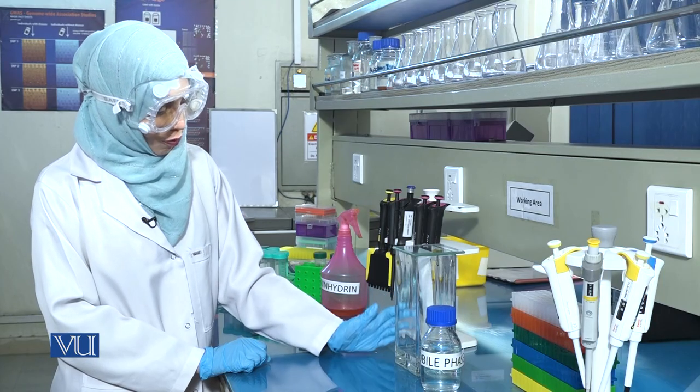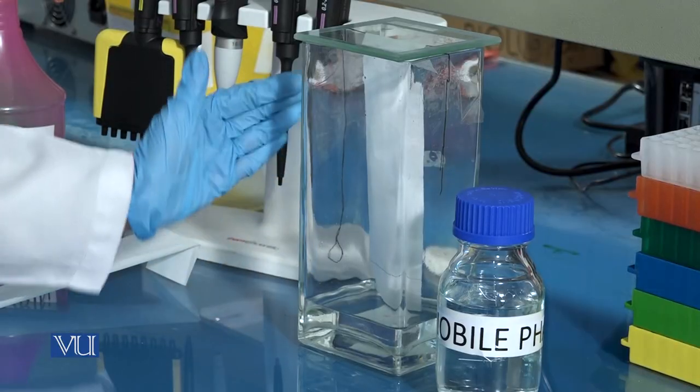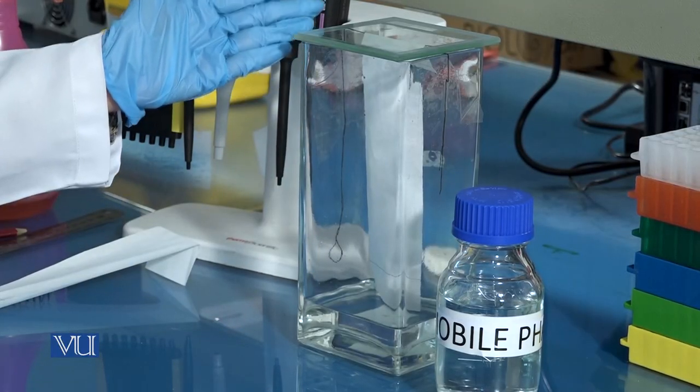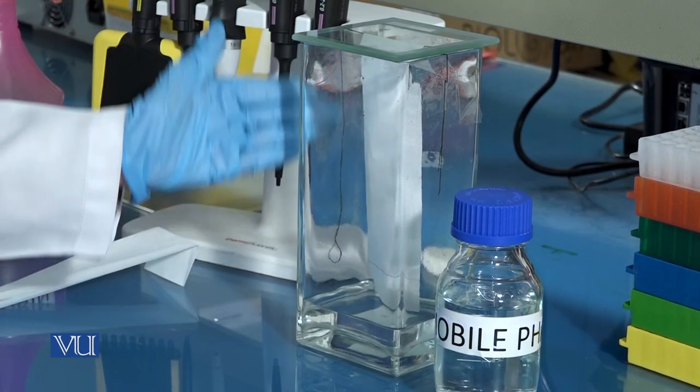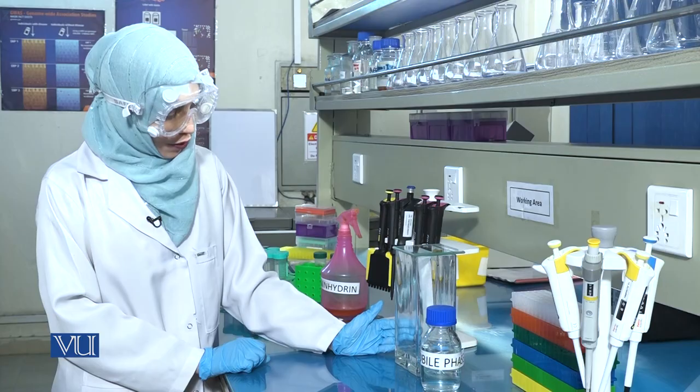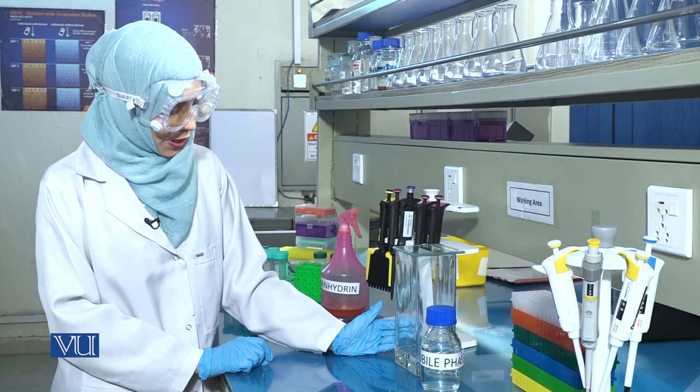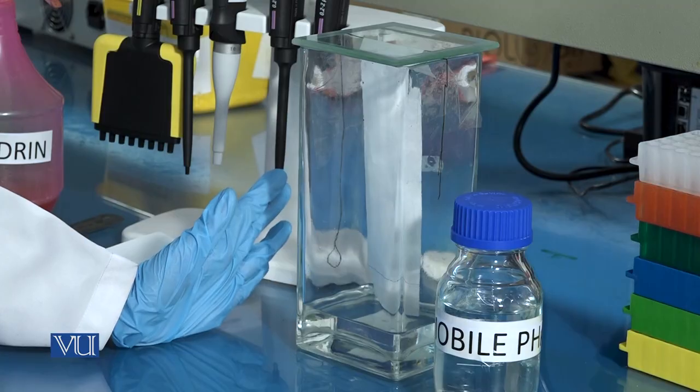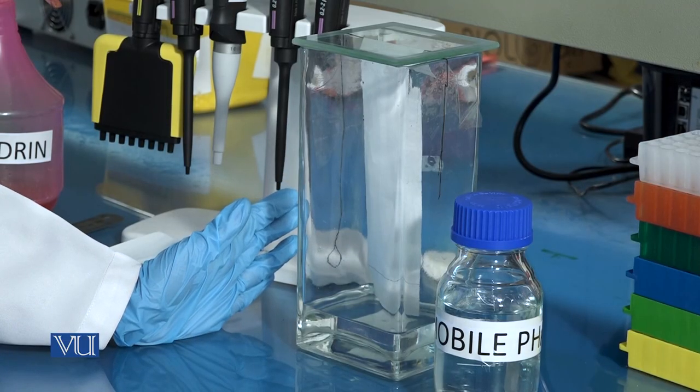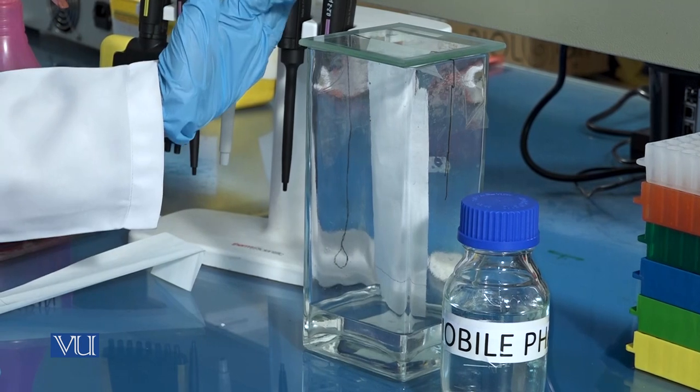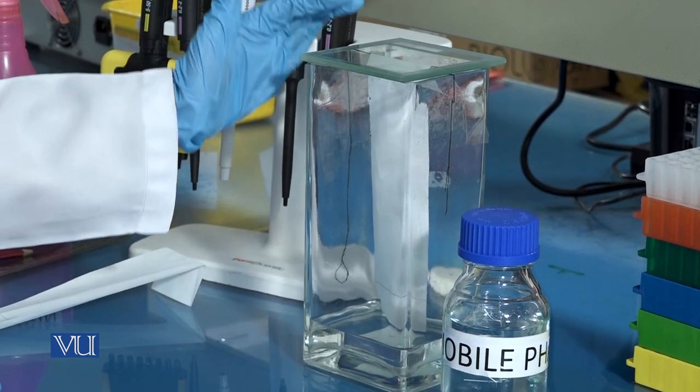Leave the filter paper in this chromatography tank till the solvent has risen to at least two-thirds of the length of this entire filter paper. This usually takes about 40 to 60 minutes. At any point during chromatography, the filter paper should not come in contact with the walls of the tank.